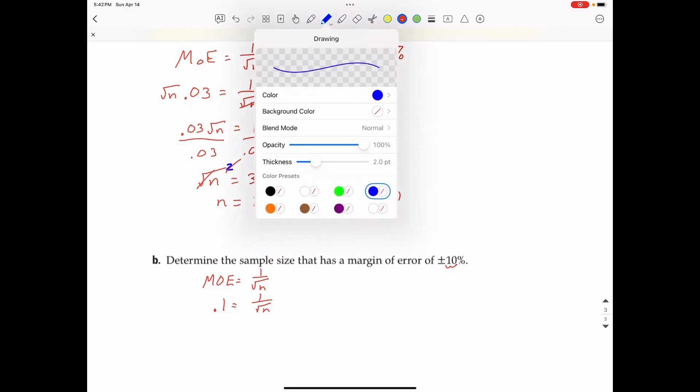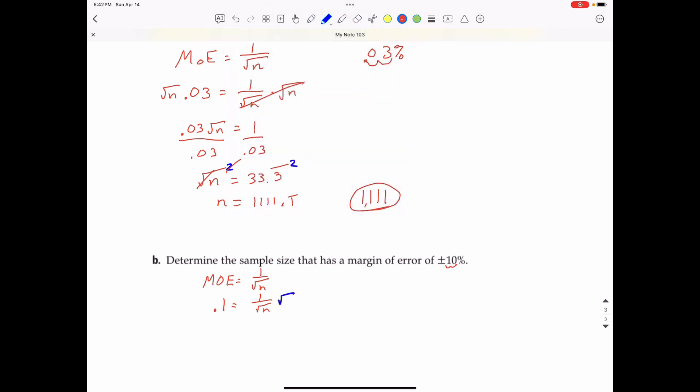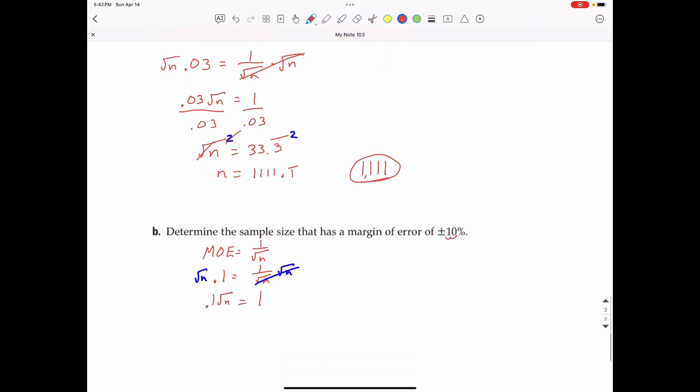We will multiply the square root of n times both sides. So that will cancel those out. And that will give me 0.1 square root of n equals 1. I will divide both sides by 0.1. When you divide both sides by 0.1, you get the square root of n equals 10. And then finish it up by squaring both sides. Squaring cancels out square roots. And that will give you n equals exactly 100. No rounding necessary on this one. So for a margin of error of 10 percent, you should have 100 in the sample size.